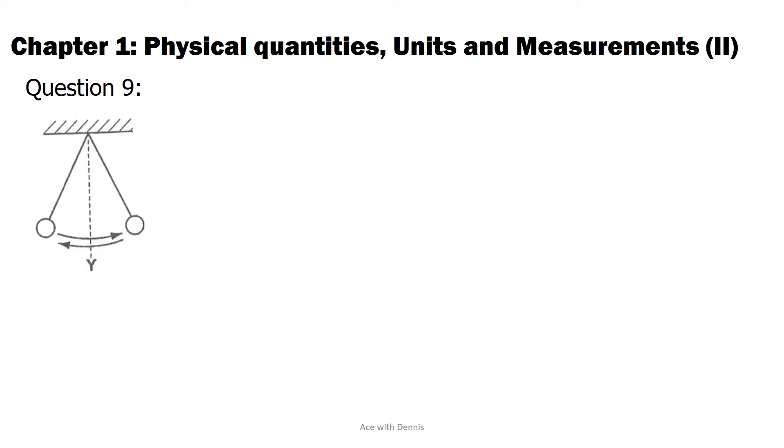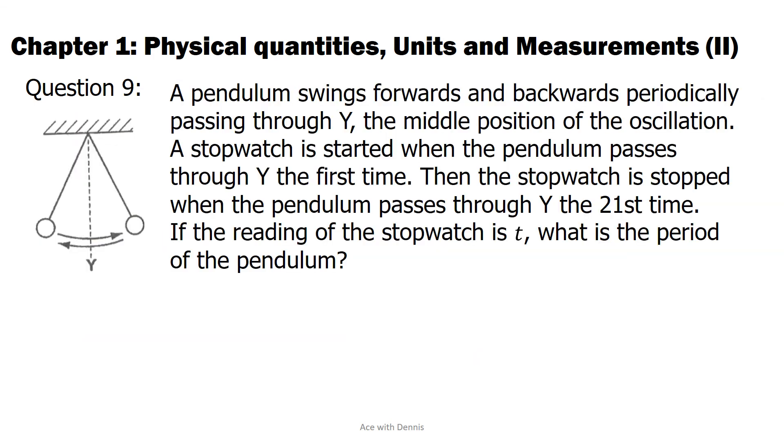Question 9. A pendulum swings forwards and backwards periodically passing through Y, the middle position of the oscillation. A stopwatch is started when the pendulum passes through Y the first time. Then the stopwatch is stopped when the pendulum passes through Y the 21st time. If the reading of the stopwatch is T, what is the period of the pendulum?